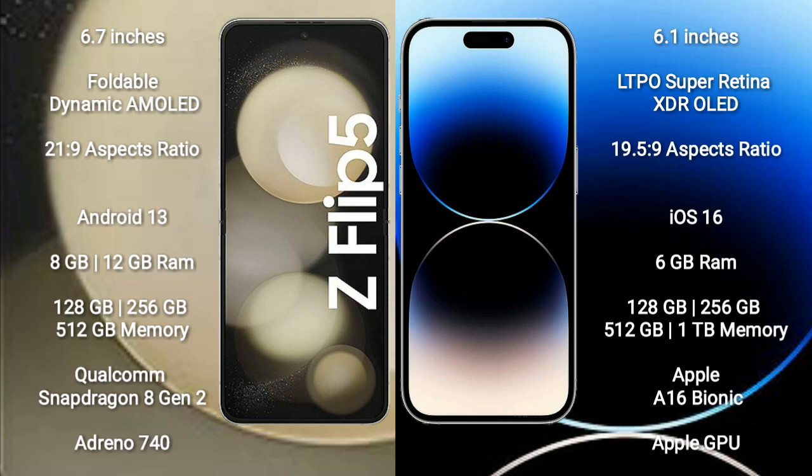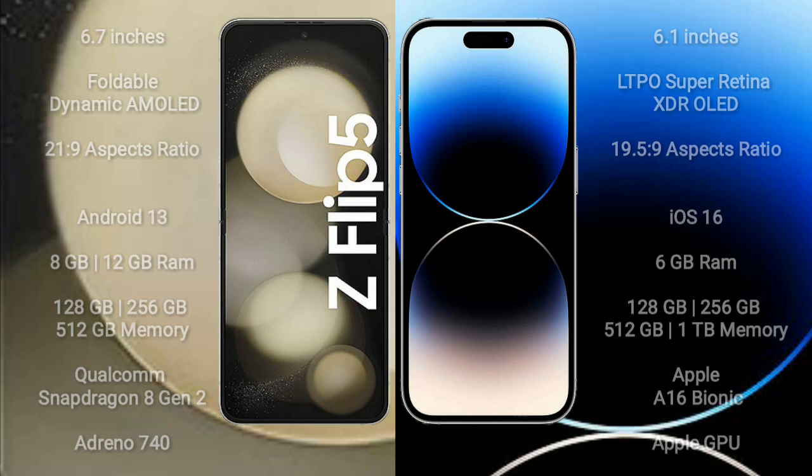Samsung Galaxy Z Flip 5 comes with 8GB RAM and 128GB to 256GB internal storage. It features the Qualcomm Snapdragon 8 Gen 2 processor and Adreno 740 GPU. iPhone 13 Pro comes with 6GB RAM and 128GB to 1TB internal storage, with an Apple A15 Bionic processor and Apple GPU.